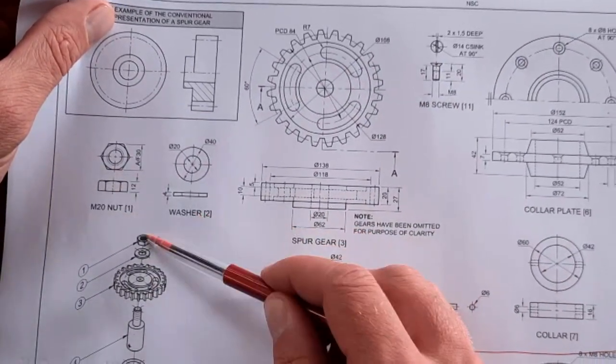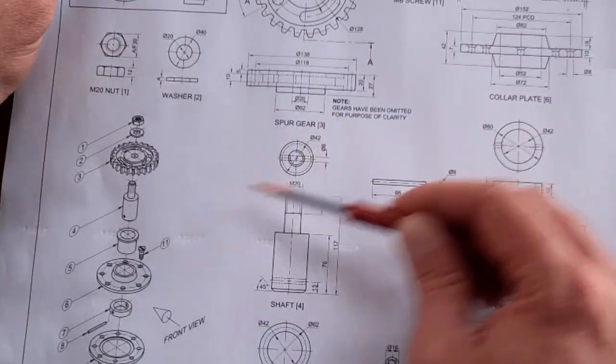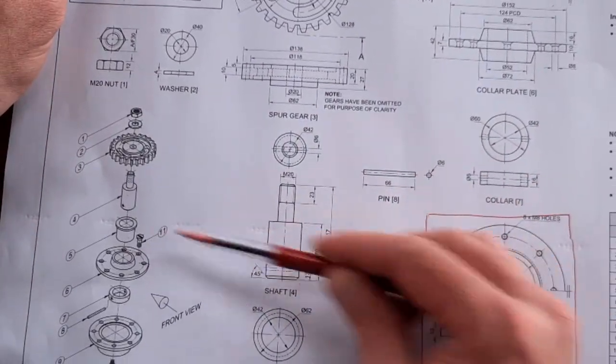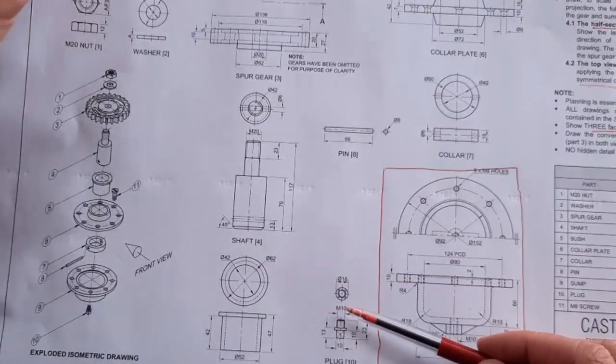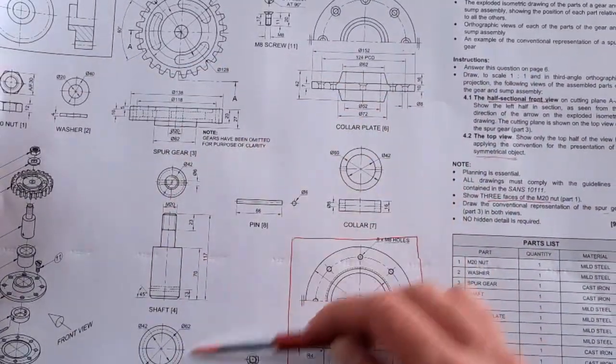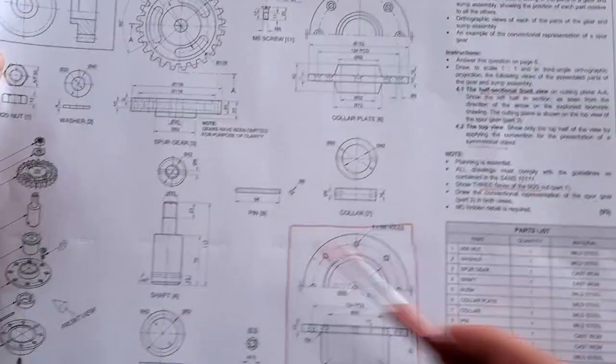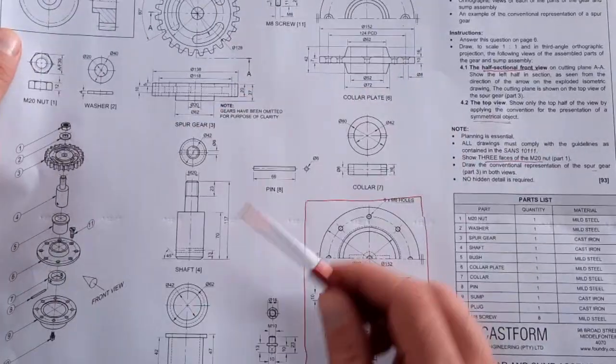You'll see here's the bush - the inner diameter here is diameter 42 and its outer diameter is also diameter 42. Another thing that's quite interesting: if you look at the order of this, exactly how they started it here, they've got the nut, then the washer, then your spur gear, then you go to the shaft, the bush is next, then we're going to have our screws, then again on top we have our collar plate. You can see there's almost that they're leading you with the layout and the measurements to understand where everything fits together.